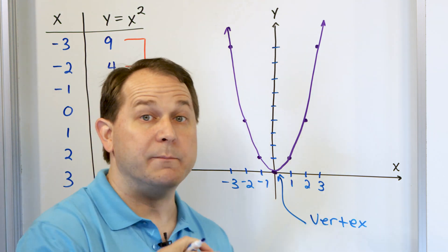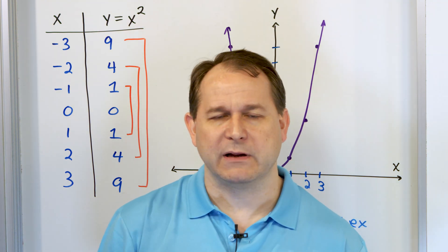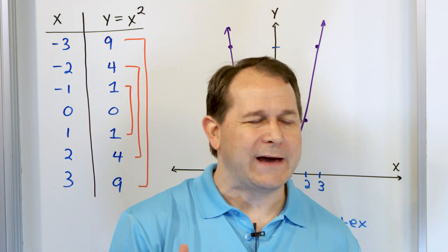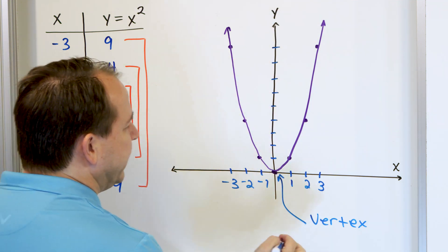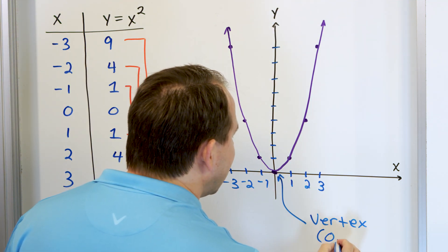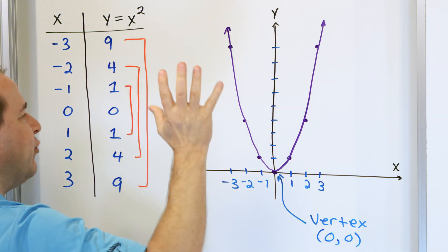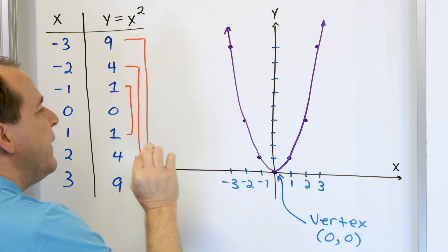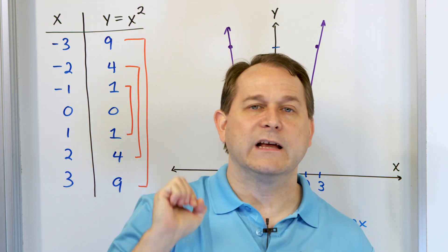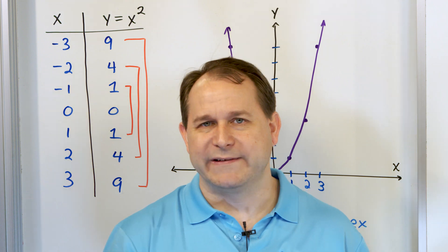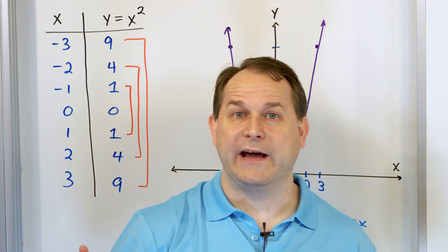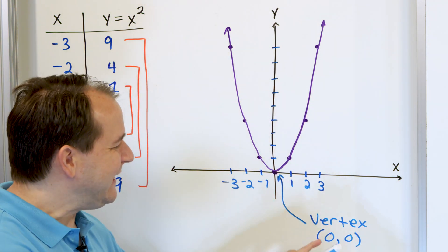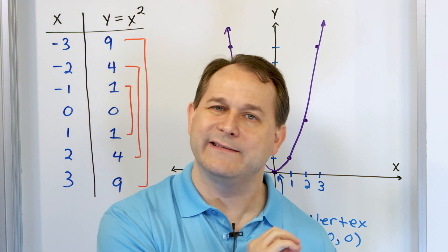Anytime a book or teacher says the vertex of the parabola is located at such-and-such, all it means is that's the lowest point of the parabola. I've drawn a parabola that opens up, so the lowest point is the vertex, and this vertex is located at (0, 0). Later on, we're going to move this parabola all around the plane. The vertex will just be the point at the lowest part of that parabola if it opens up. The parabola can also go upside down, in which case the vertex will be the tippy top — either the maximum or minimum value of the parabola.